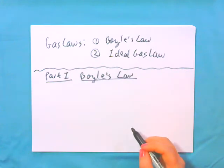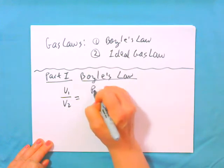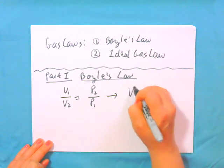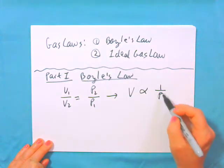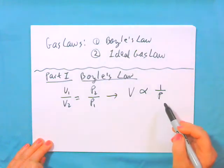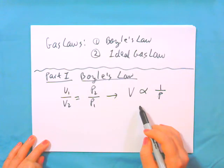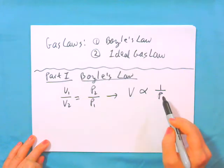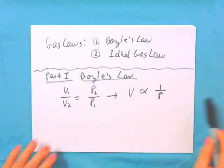Boyle's Law is the equation where you have V1 divided by V2 is equal to P2 divided by P1. Another way to write this is: volume is indirectly proportional to pressure. Because I've got it inverted for the pressure, this means that it's indirectly proportional to the pressure. It's not directly proportional, it's inversely proportional.